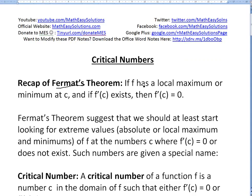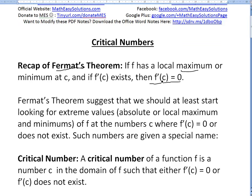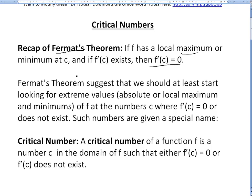Fermat's theorem states: if a function f has a local maximum or minimum at c, and if the derivative exists at c, then that derivative has to be equal to 0. Fermat's theorem suggests that we should start looking for extreme values — absolute or local max and minimums — of f at a number c where the derivative either equals 0 or does not exist.